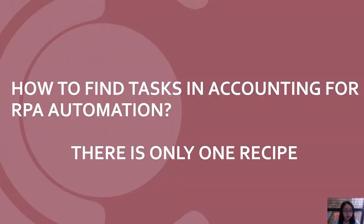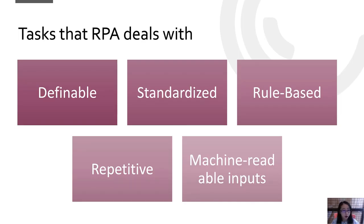So now you may ask: can you give us a list of the accounting activities that can be automated? The answer is that there is actually no single recipe of tasks in accounting that can be automated. You already learned what RPA can do, so basically the tasks that RPA deals with need to have certain features. As long as an accounting task has these features, it belongs to the scope of RPA — it doesn't matter what the specific task is.